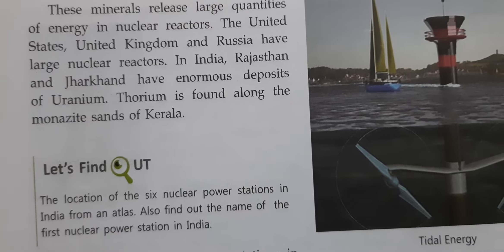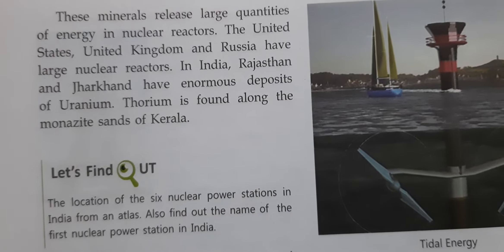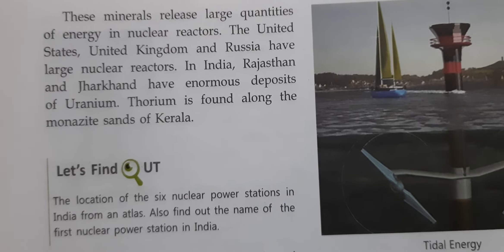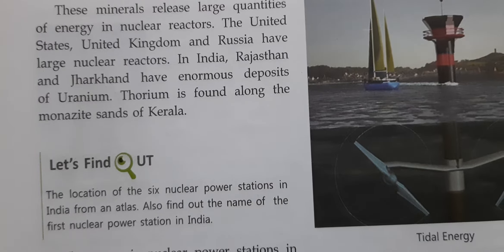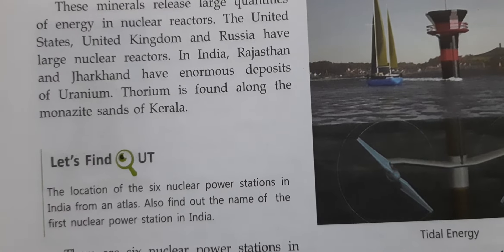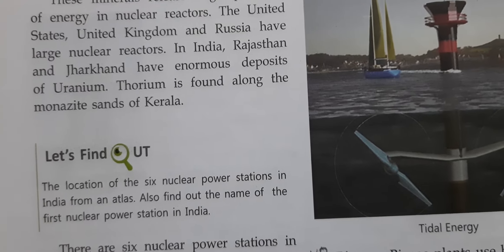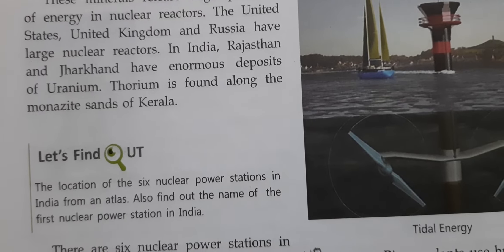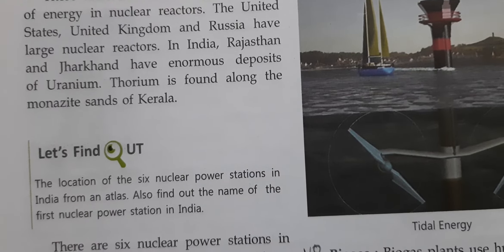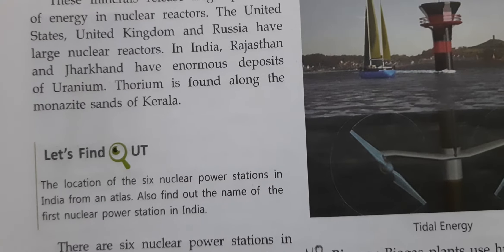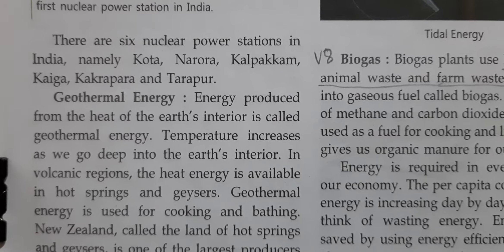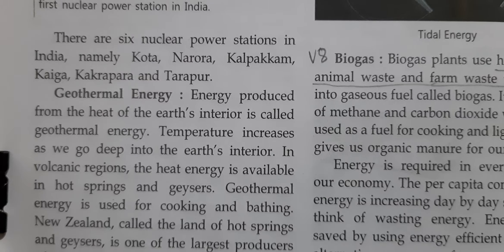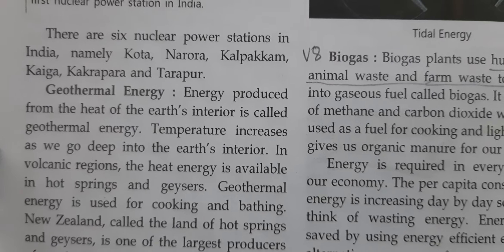Thorium is found along the monazite sands of Kerala, which is also a huge deposit for nuclear fuel. There are six nuclear power stations in India, namely Kota, Narora, Kalpakkam, Kaiga, Kakrapara, and Tarapur.